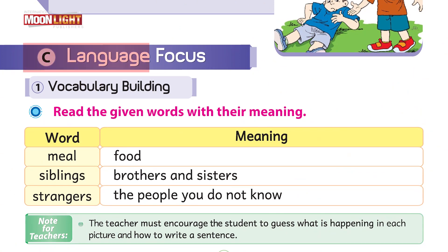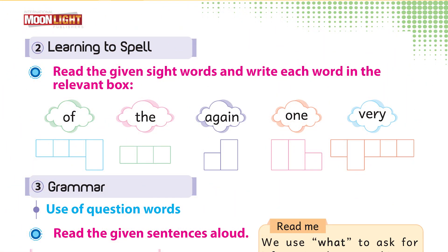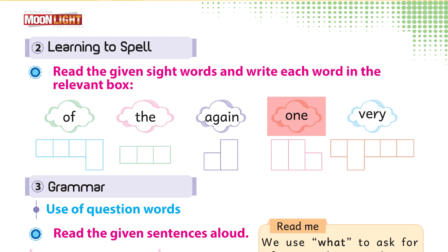Here we have completed our reading and critical thinking competency. Now it's time to move towards the language focus competency, and our first part is vocabulary building. While reading the text we have already done that — these are the sight words. Now it's time to decide in which box you are going to put these words. Let's start: off, the, again, one, and, very. Now put these words in the respective boxes.